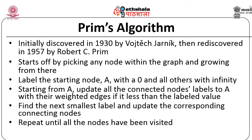While the previous algorithm — Kruskal's algorithm — starts with edges and builds the graph by selecting edges, in Prim's we start off by picking any node within the graph and grow from there. It can start with any node. Remember, in Kruskal's algorithm we started with a minimum edge; here we start with any node. You label the starting node with 0 and all others with infinity. Starting from that node, update all connected nodes' labels with their weighted edges if the weight is less than the already-labeled value.